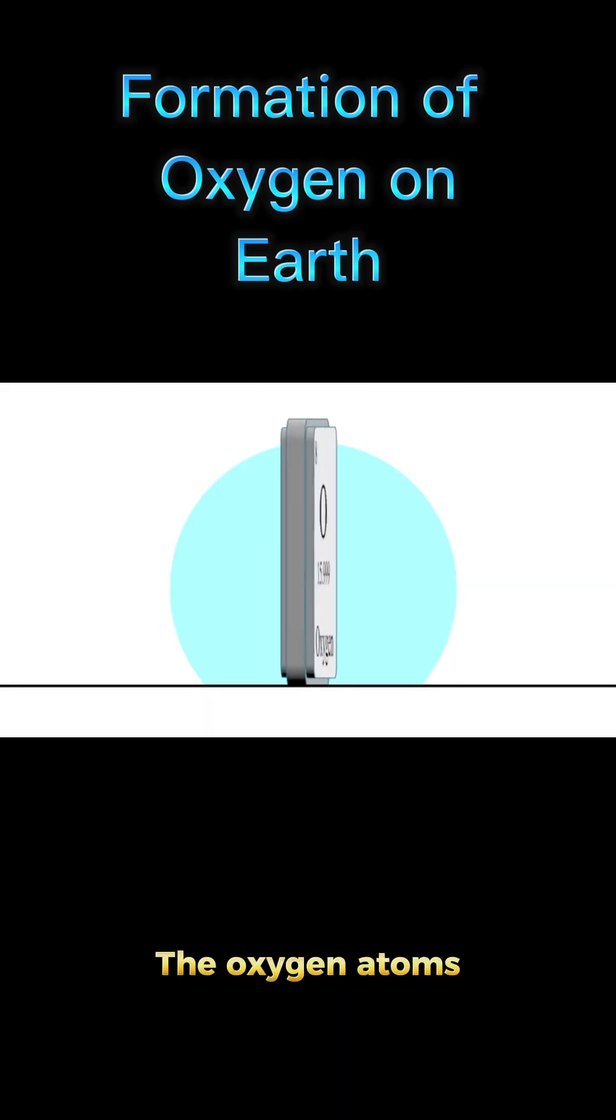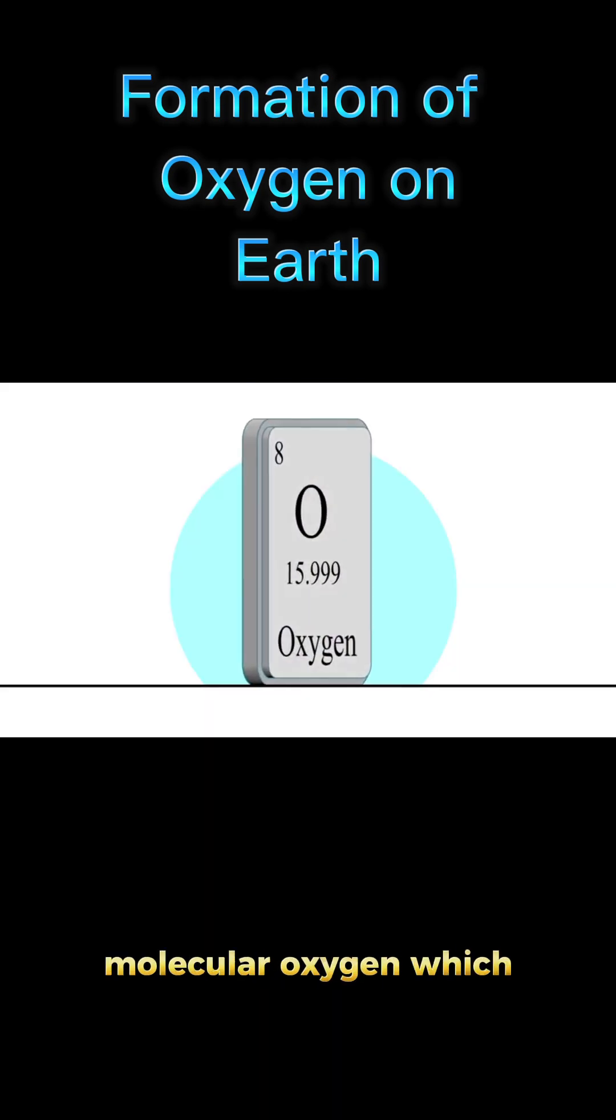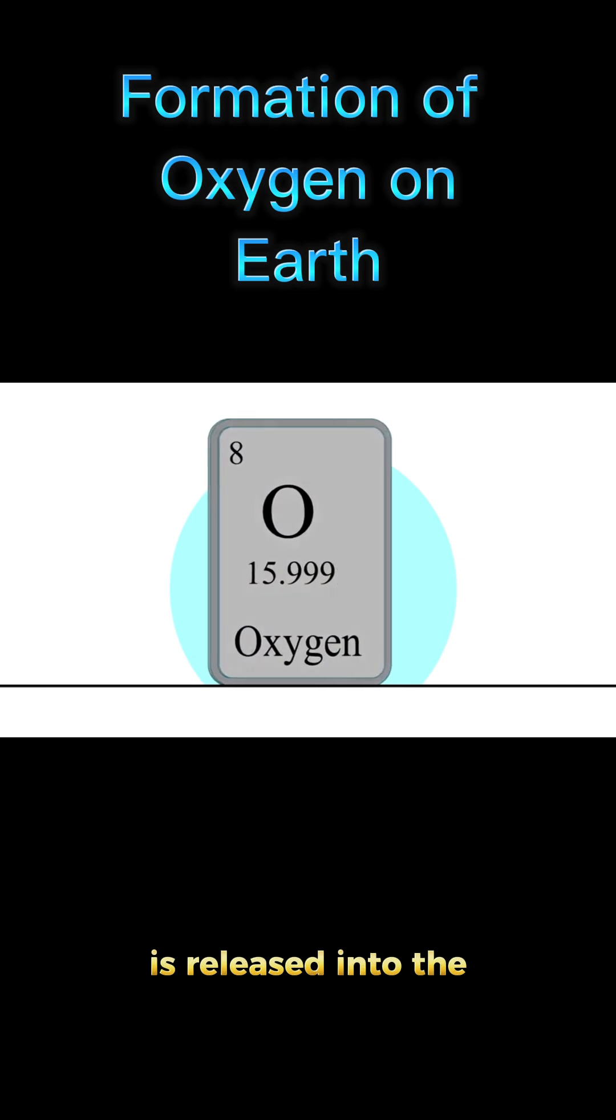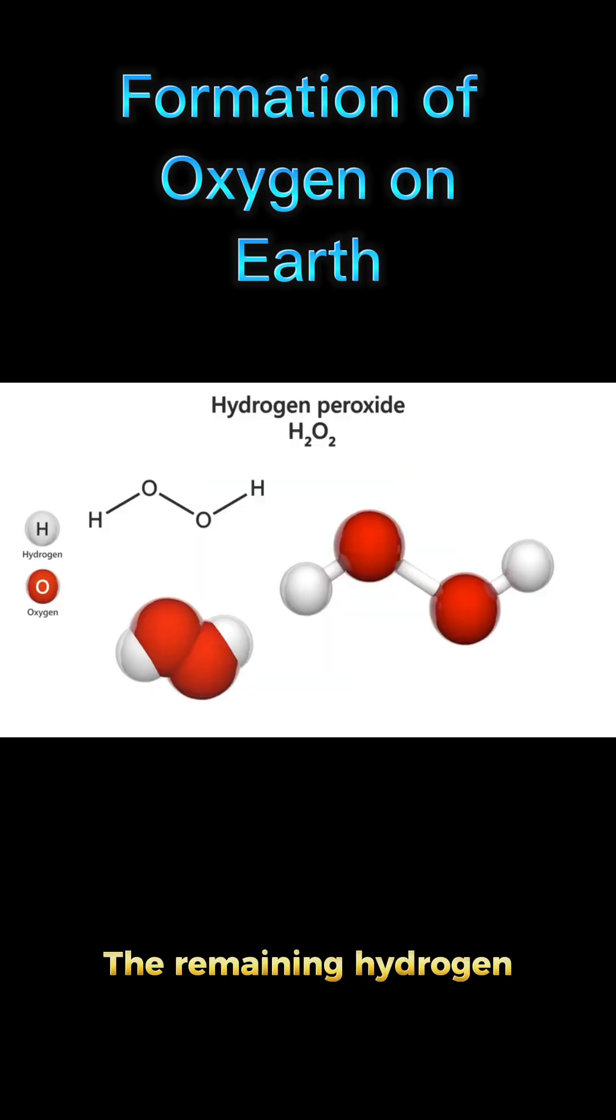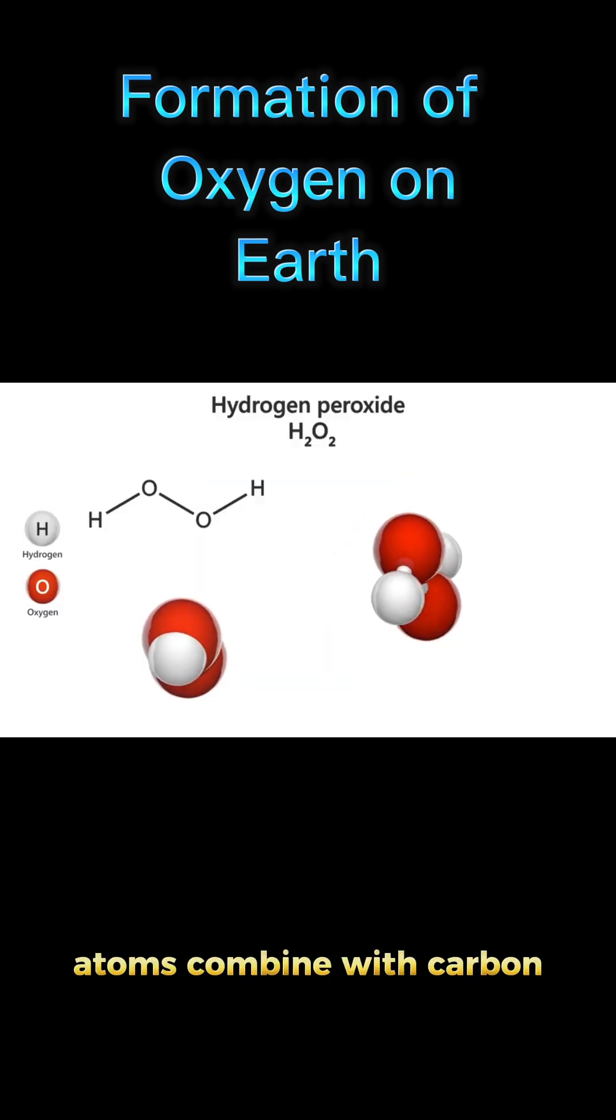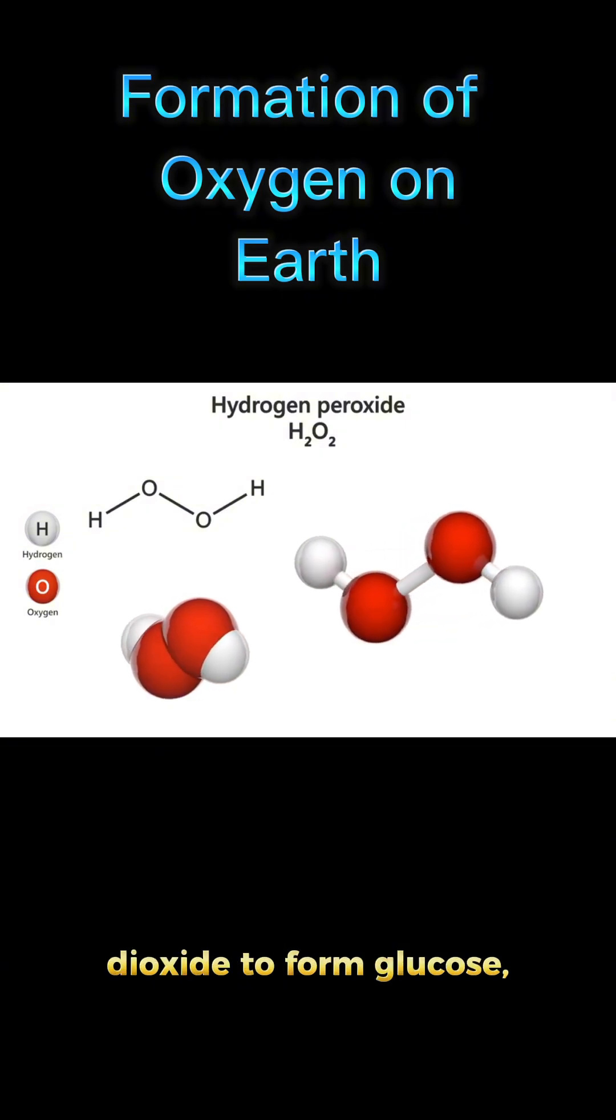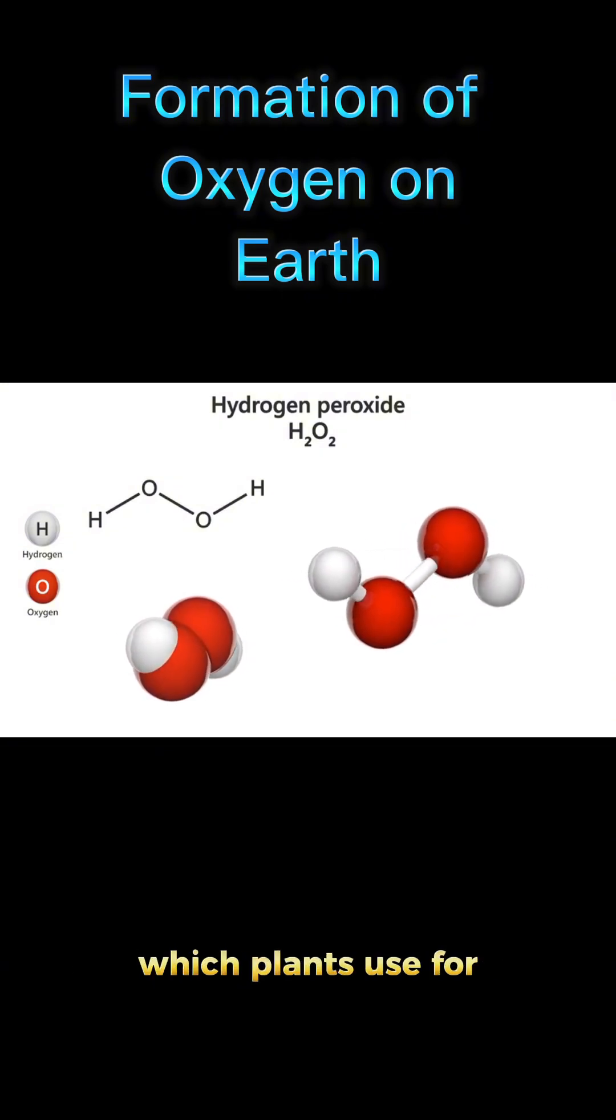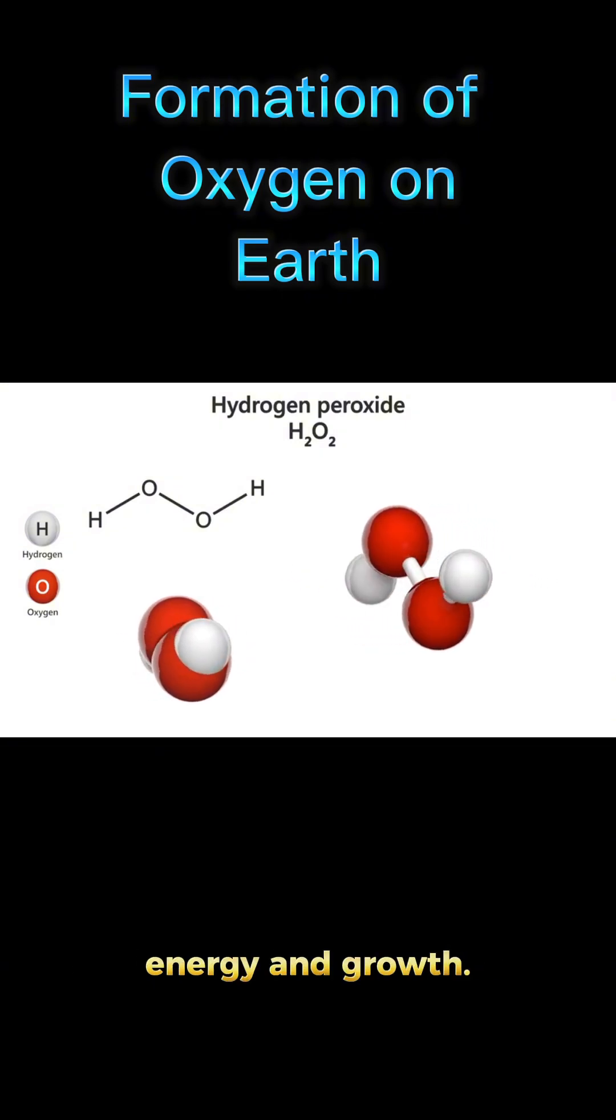The oxygen atoms combine to form molecular oxygen, which is released into the atmosphere as a byproduct. The remaining hydrogen atoms combine with carbon dioxide to form glucose, which plants use for energy and growth.